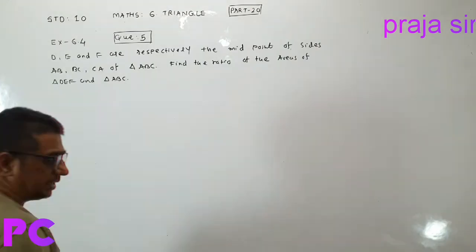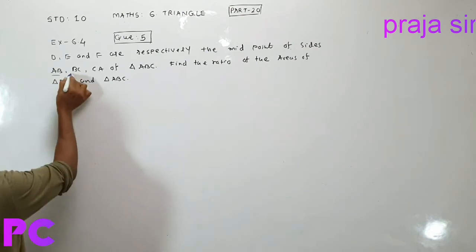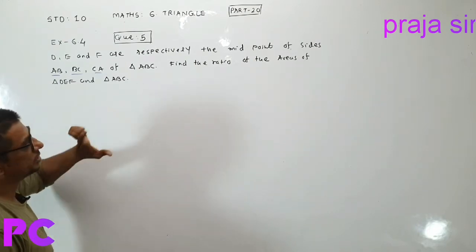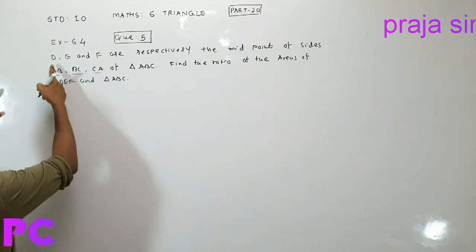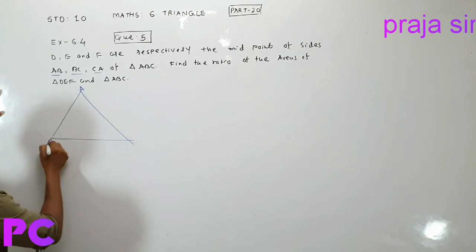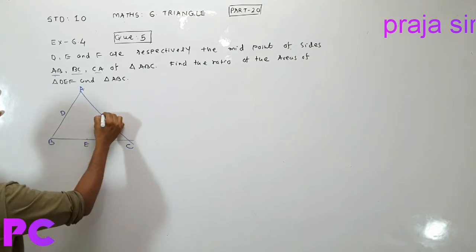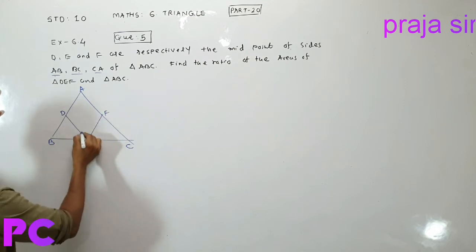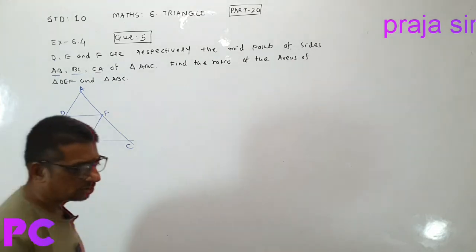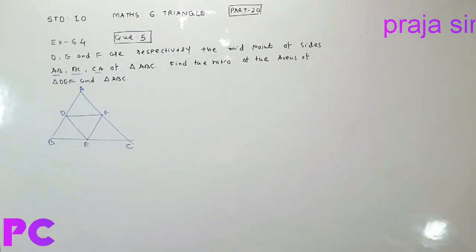Next, question number 5: D, E, F are respectively midpoints of sides AB, BC, CA. Find the ratio of the areas of triangle DEF to ABC. D is the midpoint of AB, E is the midpoint of BC, and F is the midpoint of AC. Joining them gives a triangle. Find the ratio of areas — this one is already done.